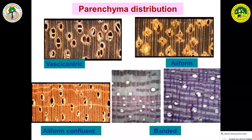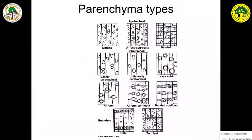Now we have finished vessels. Looking at the parenchyma, there are different types of parenchyma. Parenchyma distribution we also have to see. For example, vasocentric means the parenchyma is surrounding the vessel. If it is wing-shaped, we call it aliform, which connects two or three vessels. There is also aliform confluent and banded parenchyma. When we look at any sample, we have to see what type of parenchyma it has and its distribution.